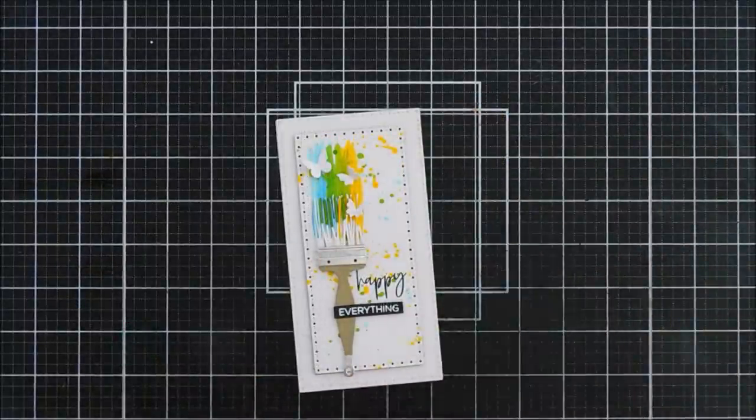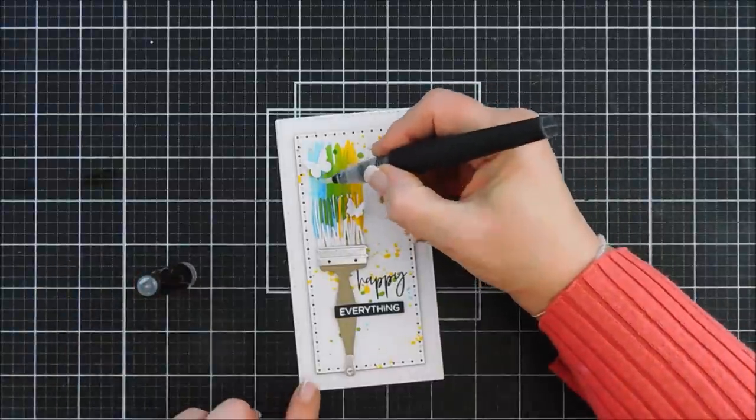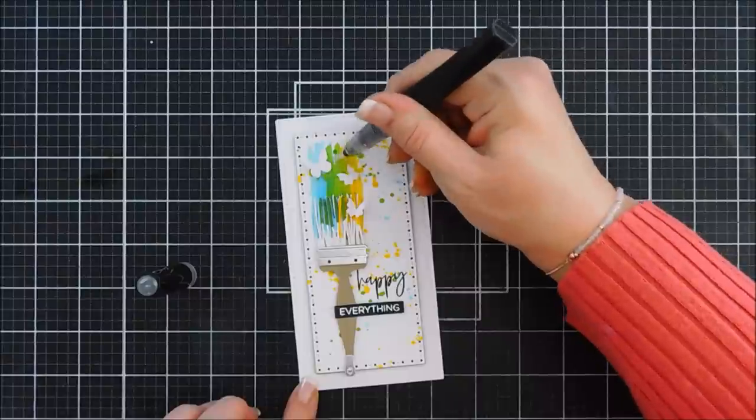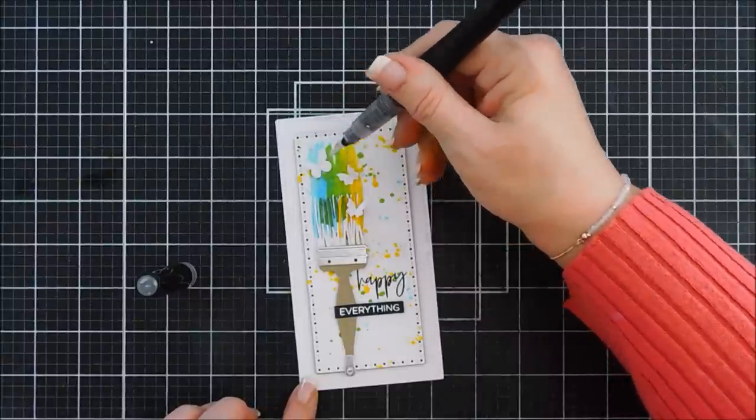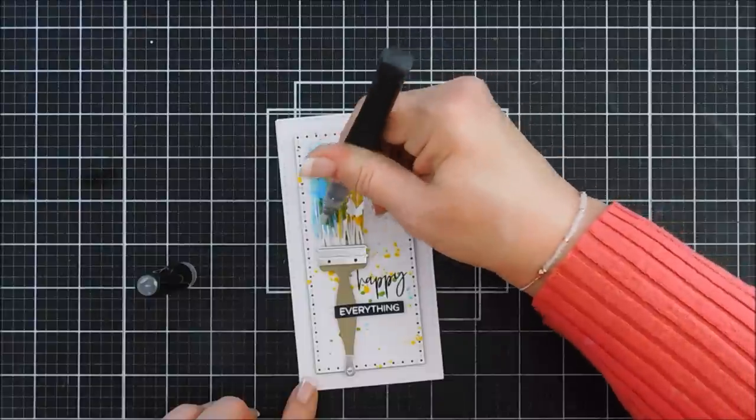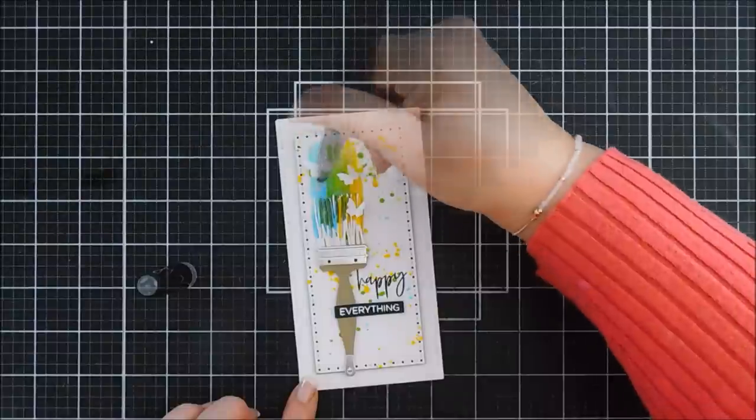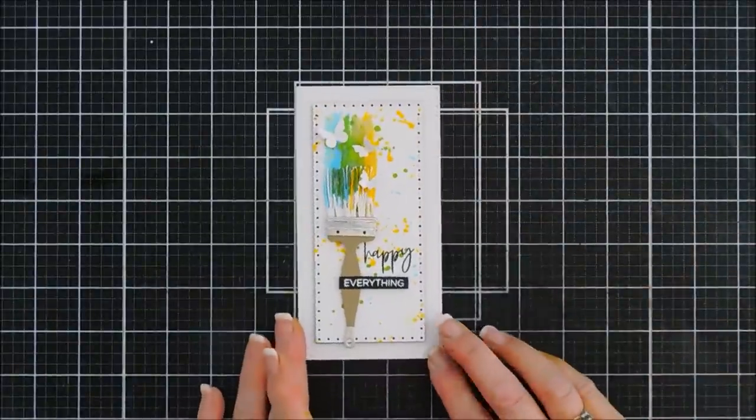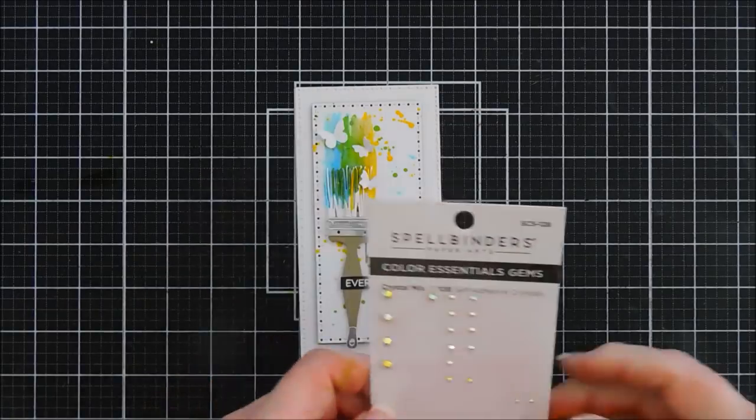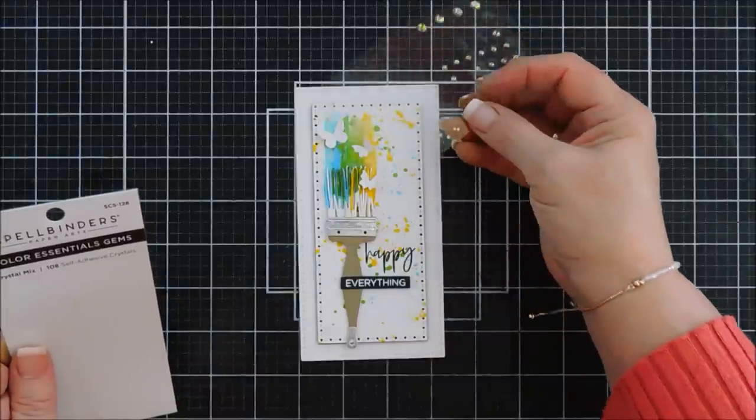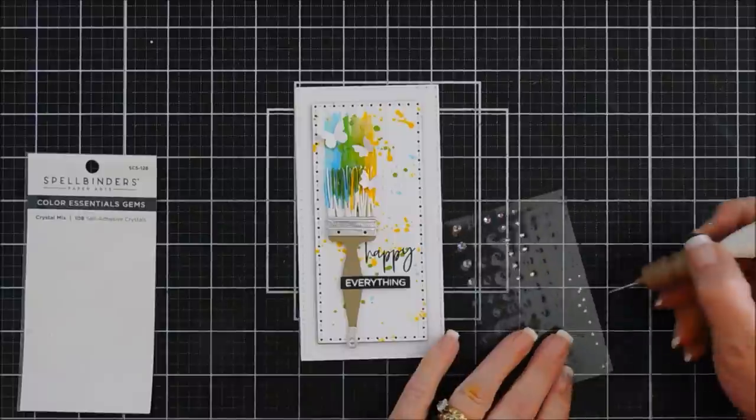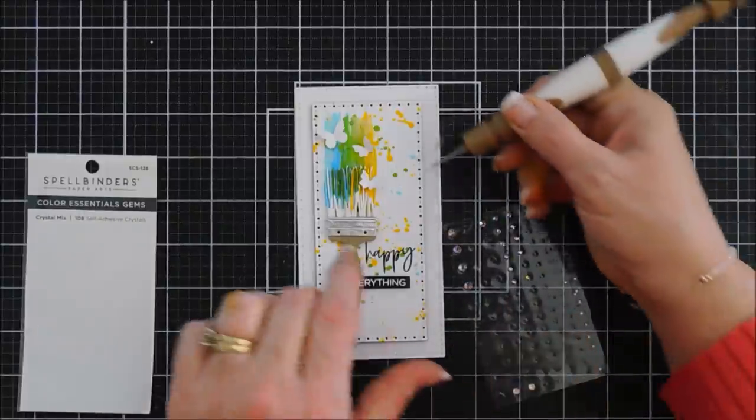I haven't used my sparkle pen in a very long time. But I think it's going to be perfect to add to our paint brush. And then last but not least, I want to add a couple clear gems. And I'm going to be using the crystal mix. And I'm just going to add a couple to the butterflies. That's all.